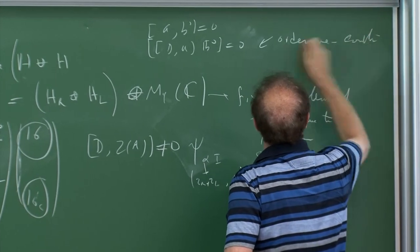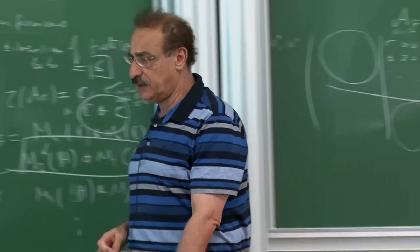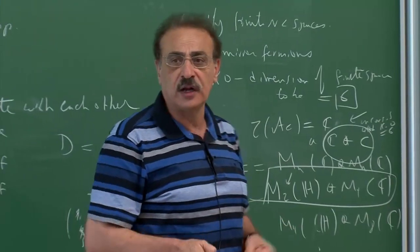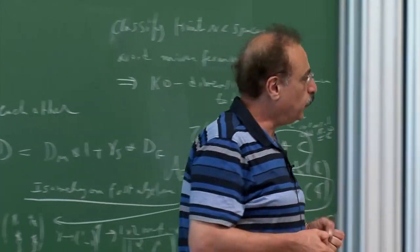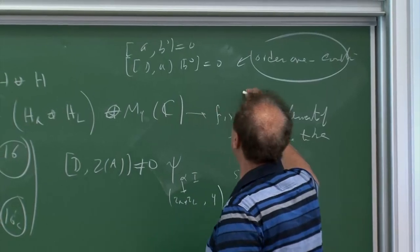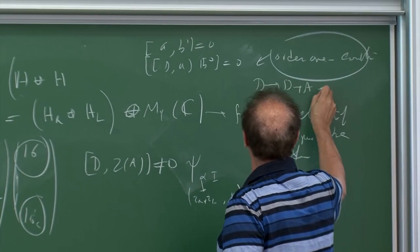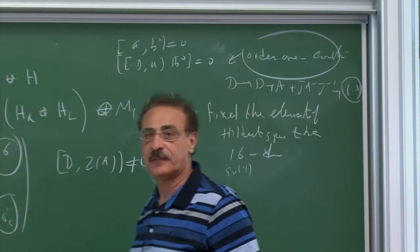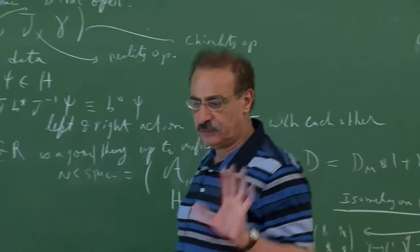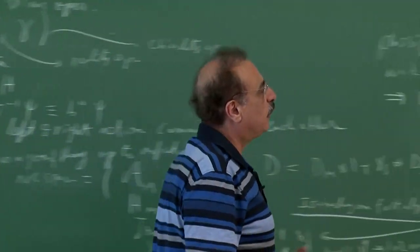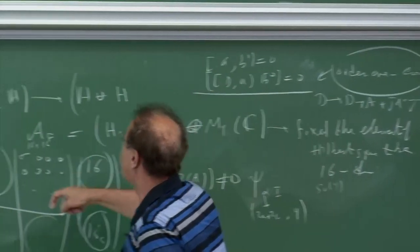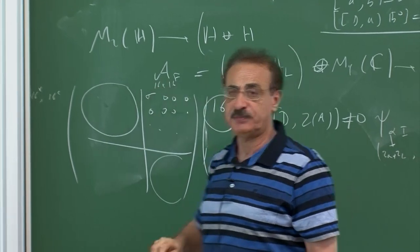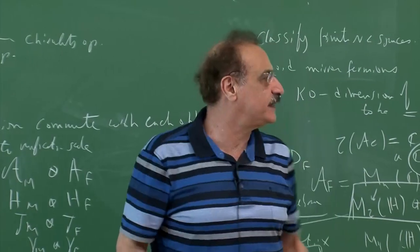The significance of the order-one condition is that the connection is linear — you don't get quadratic terms in the connection. If you don't impose it, the connection D_A = D + A + J A* J⁻¹ acquires an extra piece quadratic in the field. We require linear connections, and one can prove unambiguously that this means only one non-zero entry is allowed in the matrix.